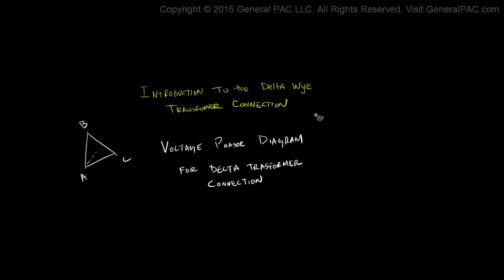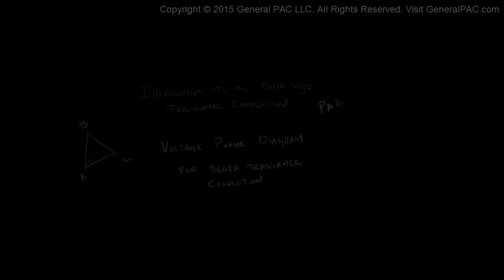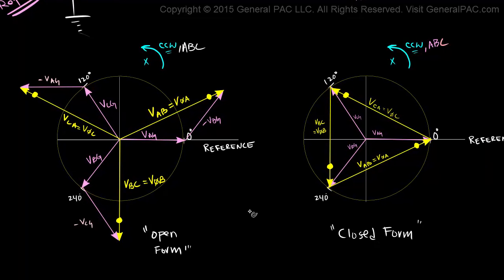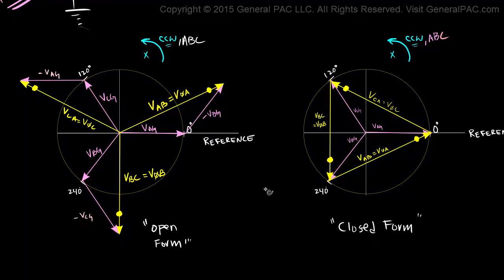Introduction to the delta-Y transformer connection, Part 6d. This is where we left off in Part 6c. In this part we are going to explain what this means and how this works. We said in the last video that this is often referred to as the open form phasor diagram, and this is often referred to as the closed form phasor diagram. The open form versus closed form phasor diagrams have their own advantages, and that's what we are going to talk about in this video.